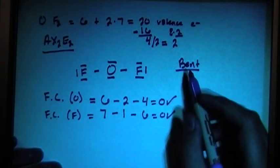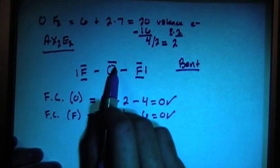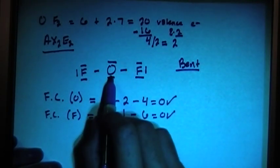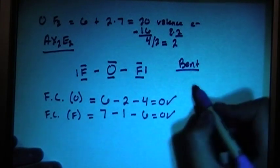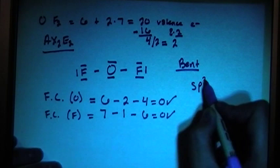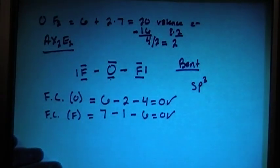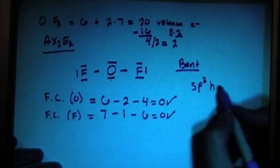Now we can look at the hybrid orbitals. Based on the central atom, there's 1, 2, 3, 4 things connecting to this central atom. So that means SP3, 1, 2, 3, 4 orbitals. So this is going to be SP3 hybrid.